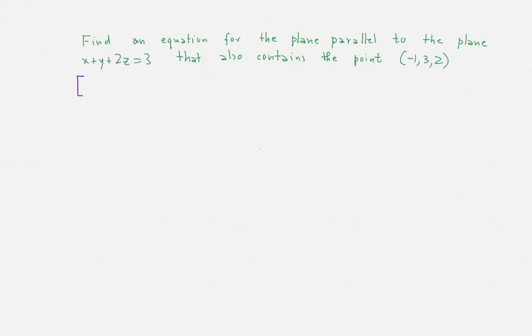So we would like to find an equation for the plane that is parallel to the plane x plus y plus 2z is equal to 3 and also contains the point negative 1, 3, 2.